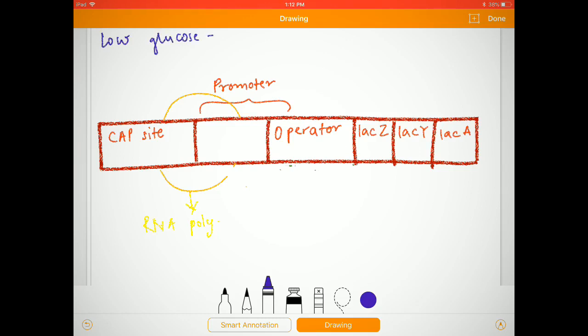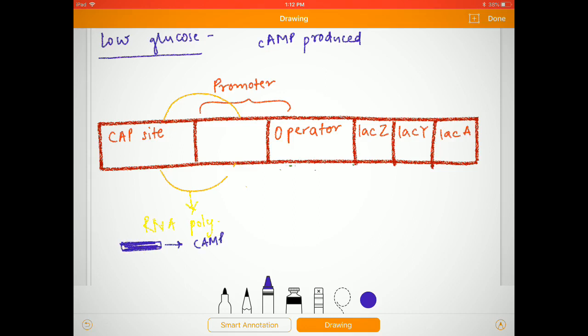This is produced, which attaches to the CAP, that is catabolite activator protein. Now, the CAP site which is present will have the CAP attached to it if and only if the cAMP is attached to the CAP.